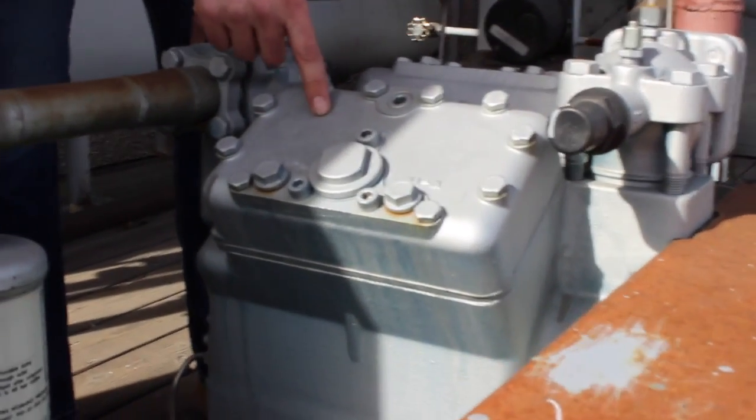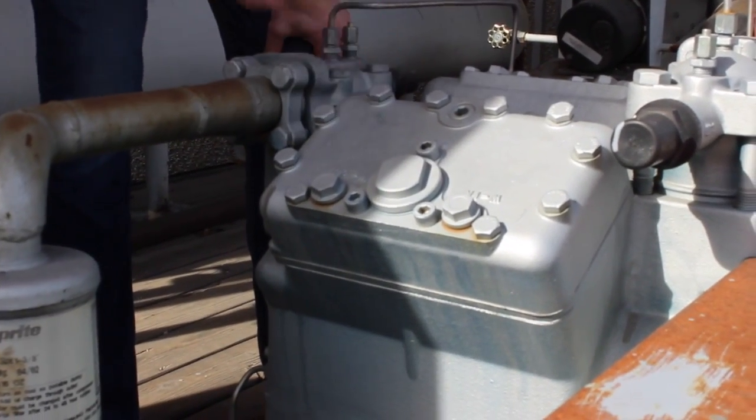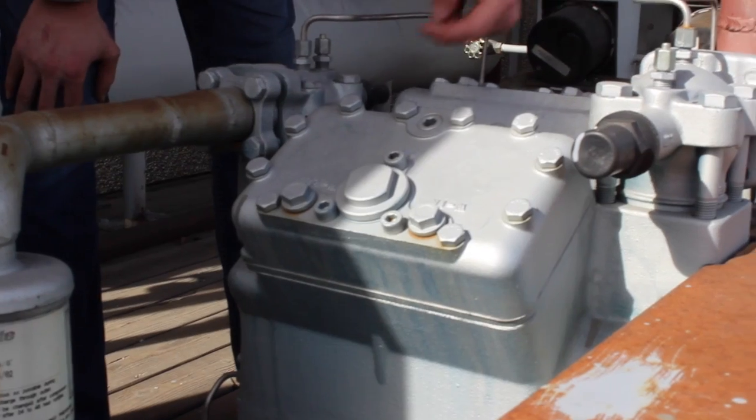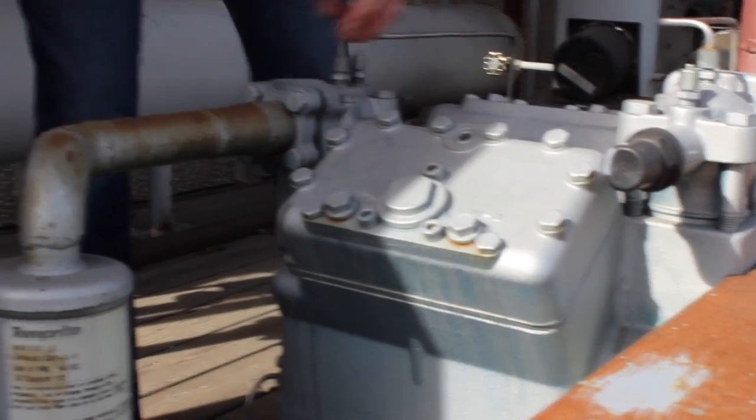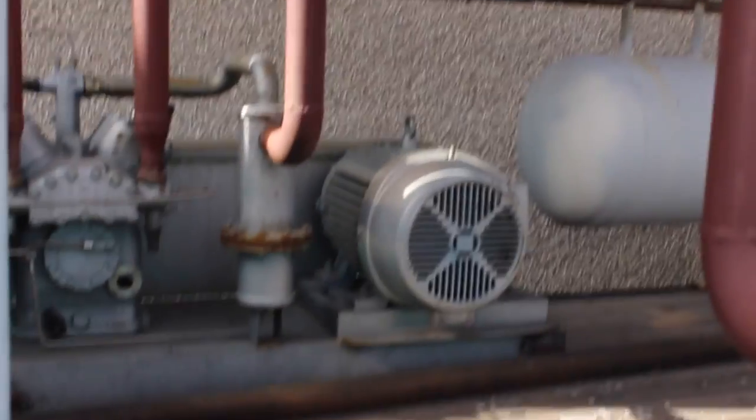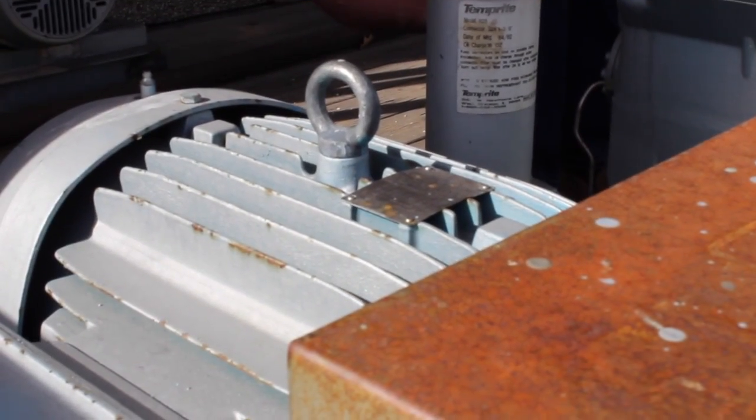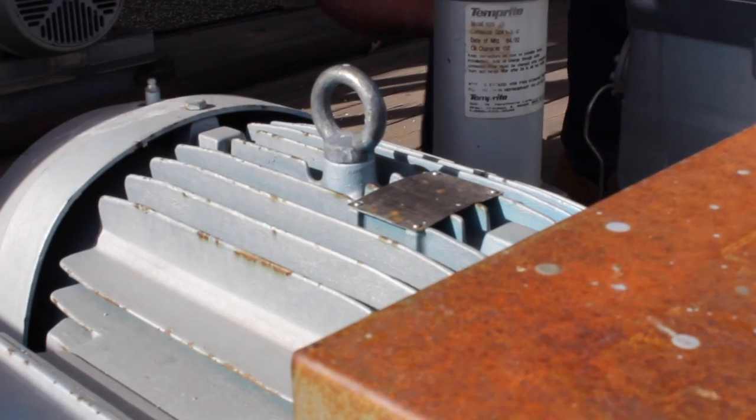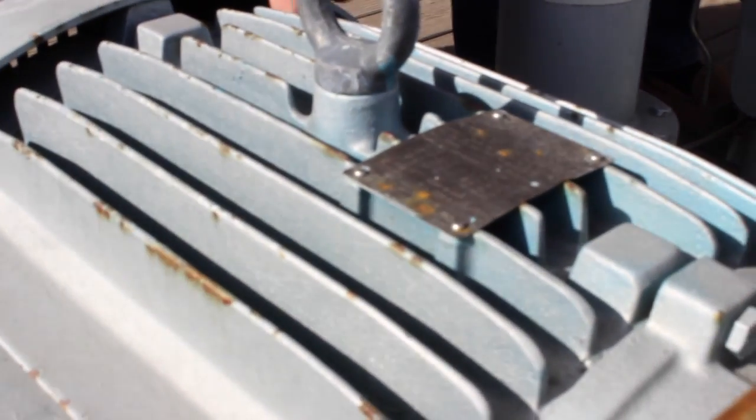This is the first stage compressor. It takes the vapor and increases it to a higher pressure before it travels to the second stage compressor, which allows it to create a lower temperature. The first stage compressor is powered by a belt-driven, three-phase, 15 horsepower motor.